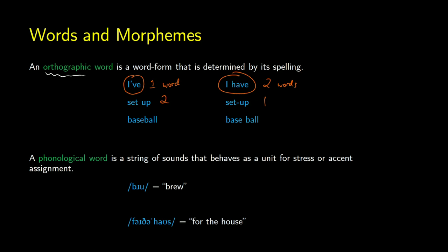Phonological words are a little bit better. A phonological word is a bunch of sounds that come together and are assigned stress, accent, or pitch depending on the language. 'Brew' is an example of a phonological word. However, in a phrase like 'for the house', 'for' and 'the' are unstressed, so the stress comes with 'house' — these just tag on to make one phonological word. So maybe that's not the best definition of a word either.